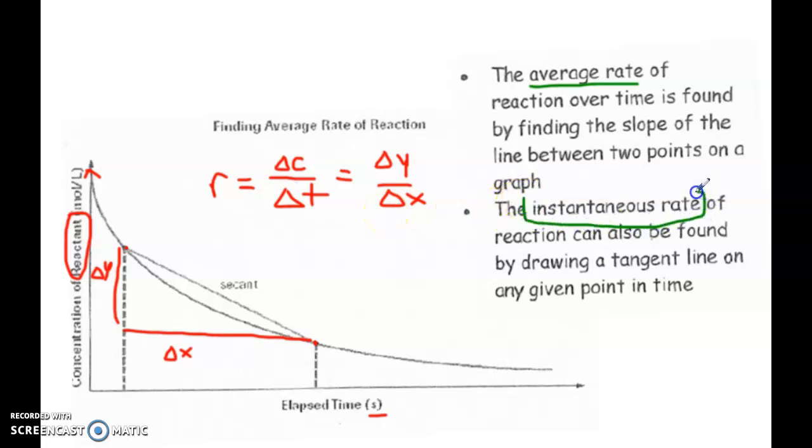An instantaneous rate means that you are essentially finding the rate of reaction not over two points of time, but actually at one point in time. So instead of saying between one minute and four minutes, it could say what is the rate of reaction at 2.5 minutes, like the exact moment.